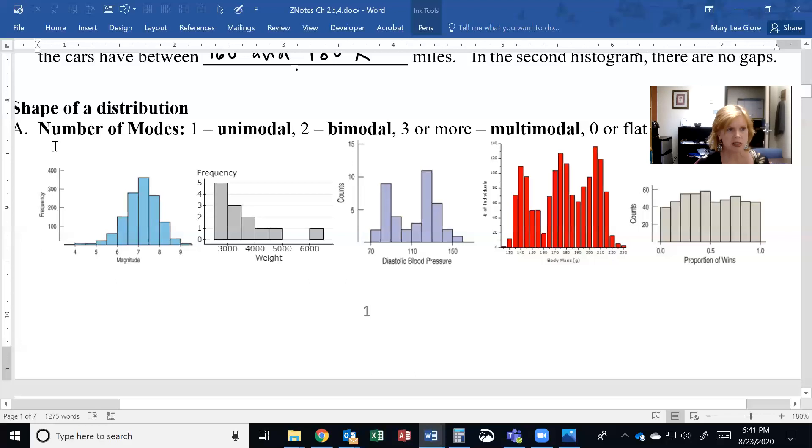There are a few aspects of its shape that we can talk about. The first one I'm going to talk about is the number of modes. A mode is where the graph goes up and down, kind of like a peak or a mountain. So it goes up and it goes down, or it just goes down.